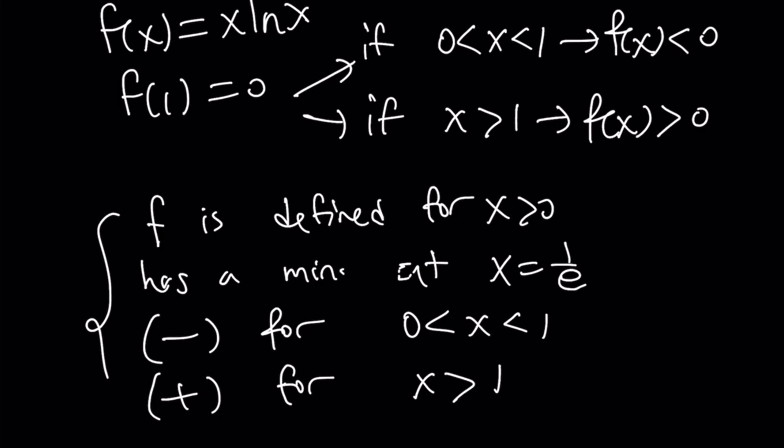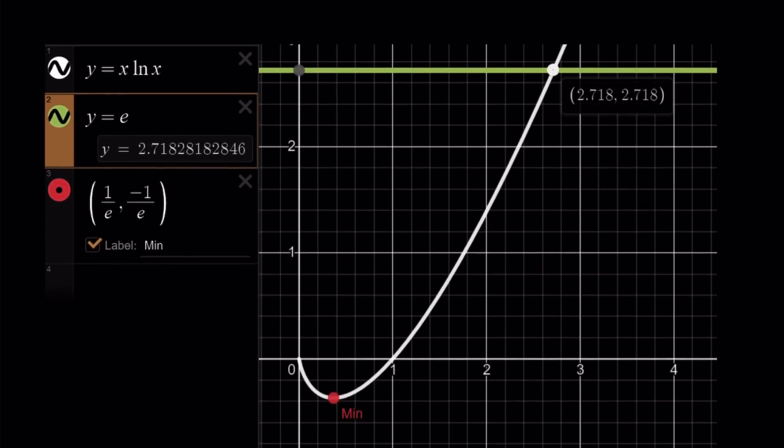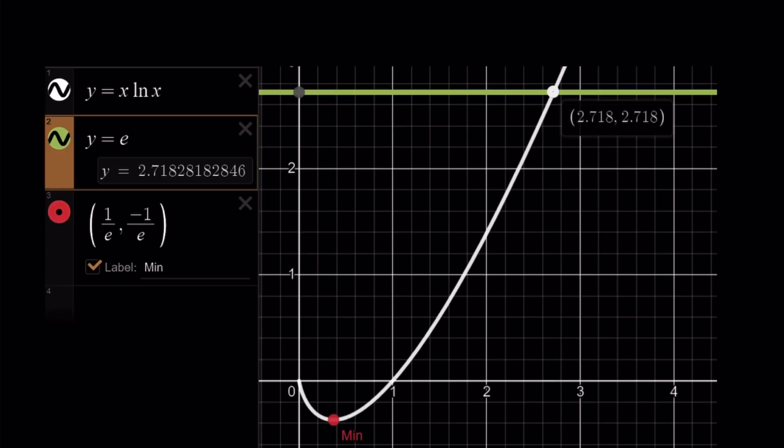And here's the graph of our function. With all its glory, the graph of y equals x ln x. And as you can see here, it has a minimum at 1 over e, negative 1 over e, because that's what you get if you plug in x equals 1 over e. And it intersects y equals e at only one point, and that just happens to be e. This is an approximate value for it. This brings us to the end of this video.